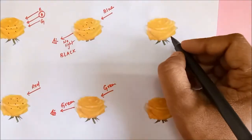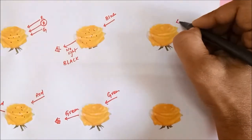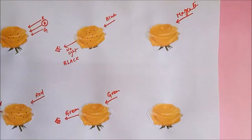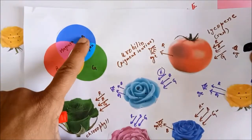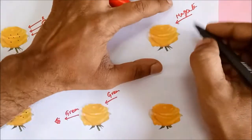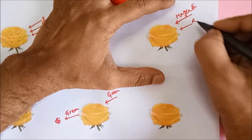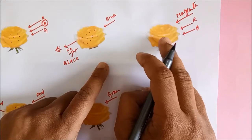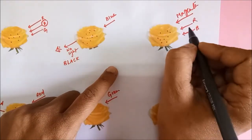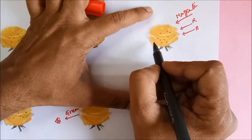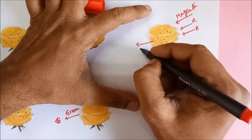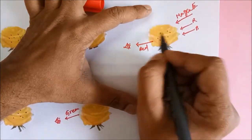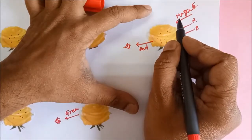Now let's impart some magenta light on it. Magenta is made up of red and blue, so we can consider this magenta light to be made up of red and blue light together. We know that the blue light will be totally absorbed by the pigments, so blue light will not be in the reflected light. In the reflected light we will only see red color, which reaches our eye. So the yellow rose appears red in magenta light.